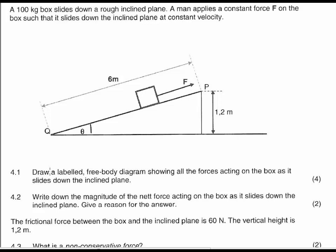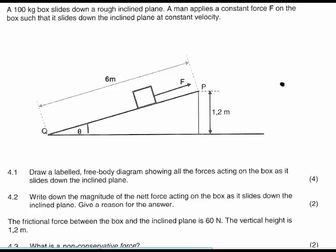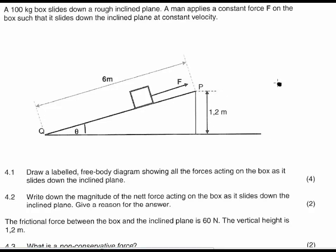For the first question, it asks you to draw a labeled free body diagram showing all the forces acting on the box as it slides down the inclined plane. A free body diagram is just a dot — always remember that. Then we are going to have our forces indicated here. The first force is the normal force, present because the block is on the surface. I'm going to call it F subscript N.